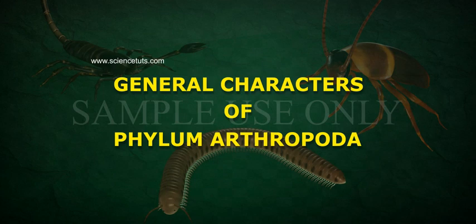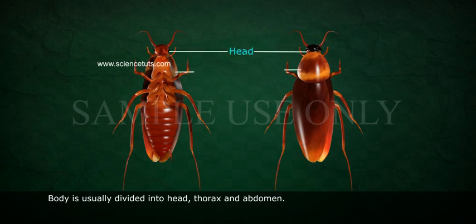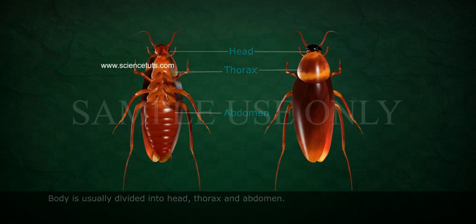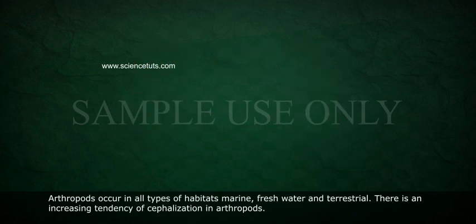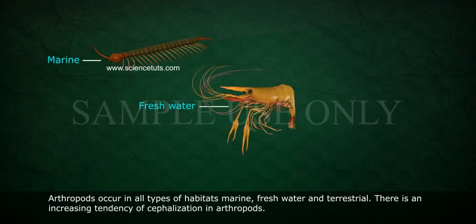General Characters of Phylum Arthropoda: The body is usually divided into Head, Thorax, and Abdomen. Arthropods occur in all types of habitats — marine, freshwater, and terrestrial.